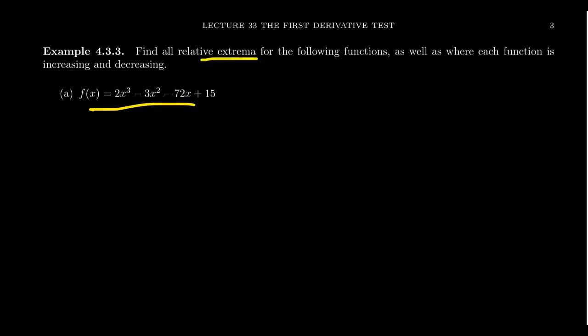If we're looking for the local or relative extrema, we know that by Fermat's theorem these will occur at either endpoints if we have a closed interval, which we don't, or they'll happen at the critical numbers. The critical numbers are those numbers which make the first derivative go to zero or make the first derivative undefined. So the first thing we need to do is calculate the first derivative. By the usual power rule, the first derivative is equal to 6x² - 6x - 72.